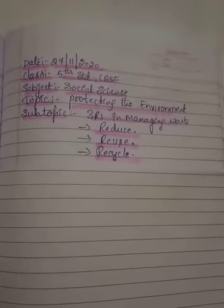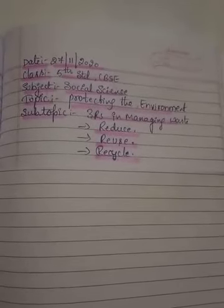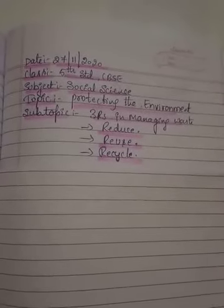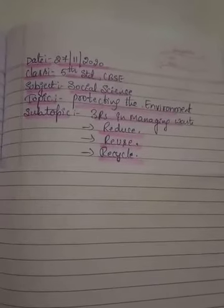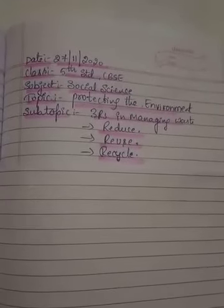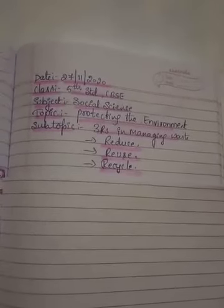Next is water pollution. Harmful substances mix with water bodies like rivers, lakes, and oceans, making the water dirty — this is called water pollution. It is caused by dumping of garbage, domestic wastage into sewage, and festival waste into the water bodies.